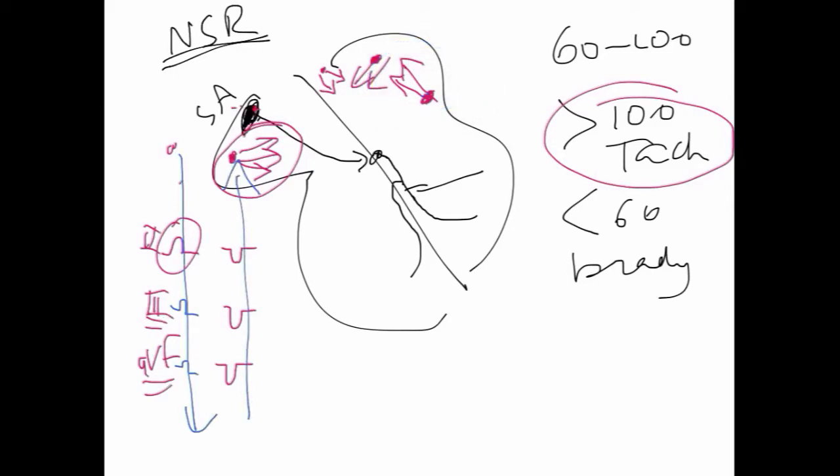All right, so now what happens if this SA node stops working? So the SA node, we said, it should go from 60 to 100. Now, what happens is that the AV node will take over. This is the AV node in here. And the AV node is about 40 to 60.